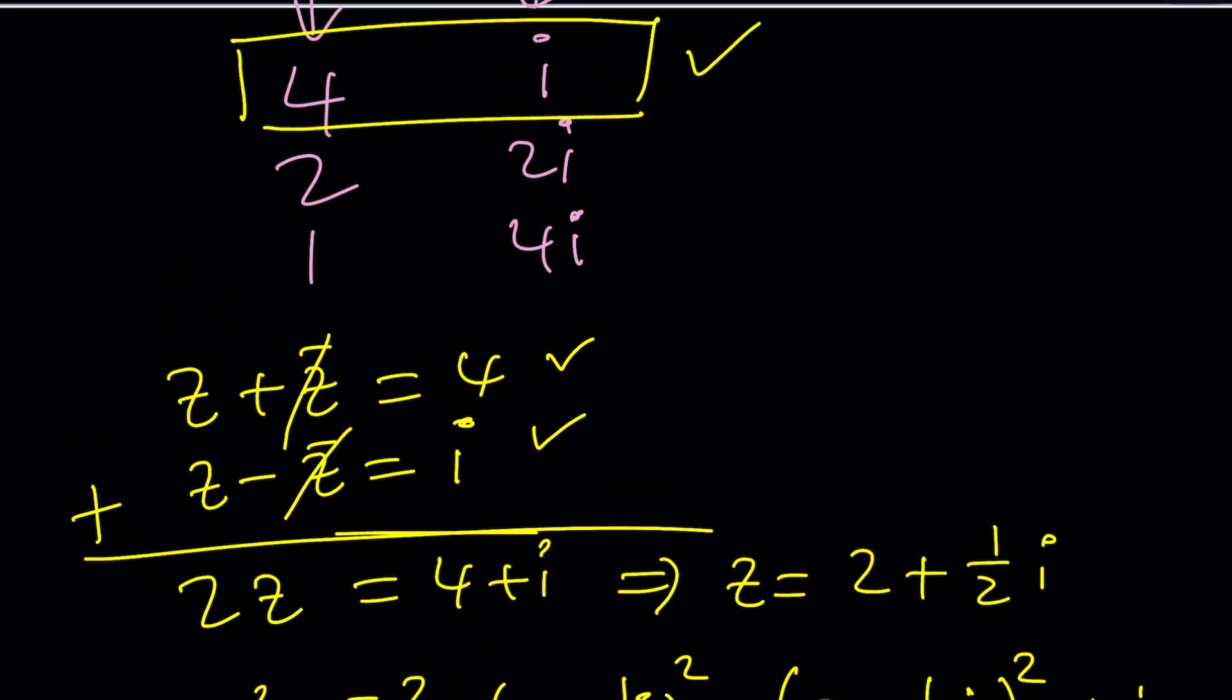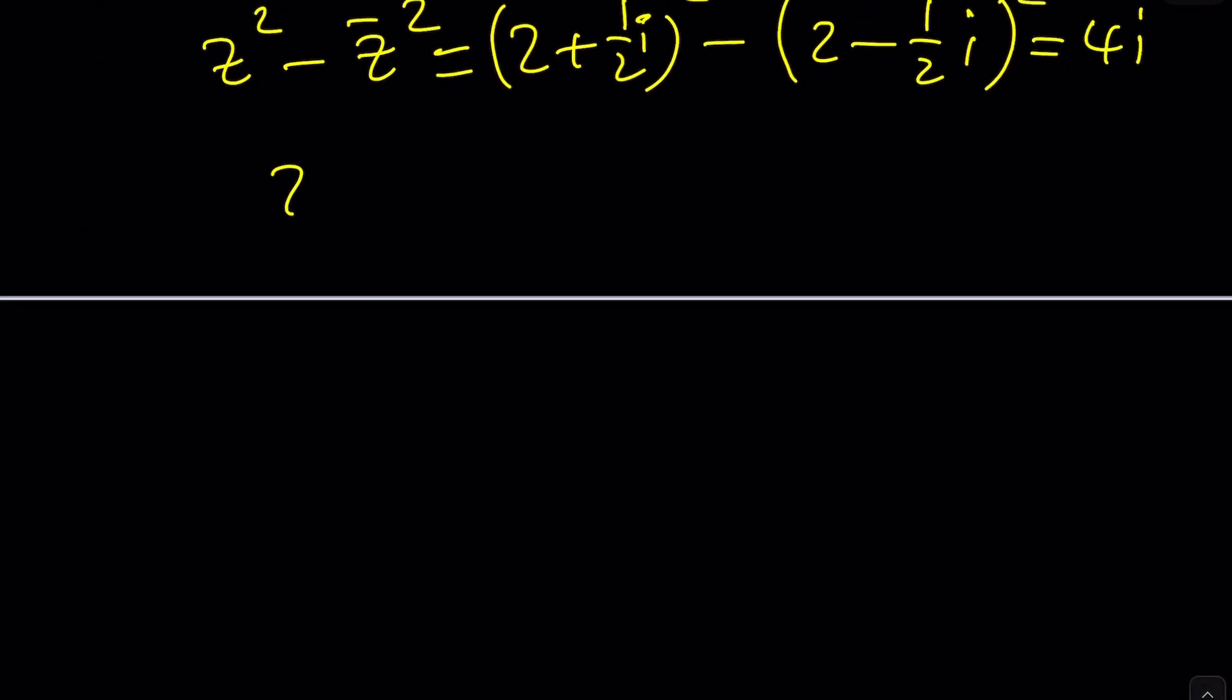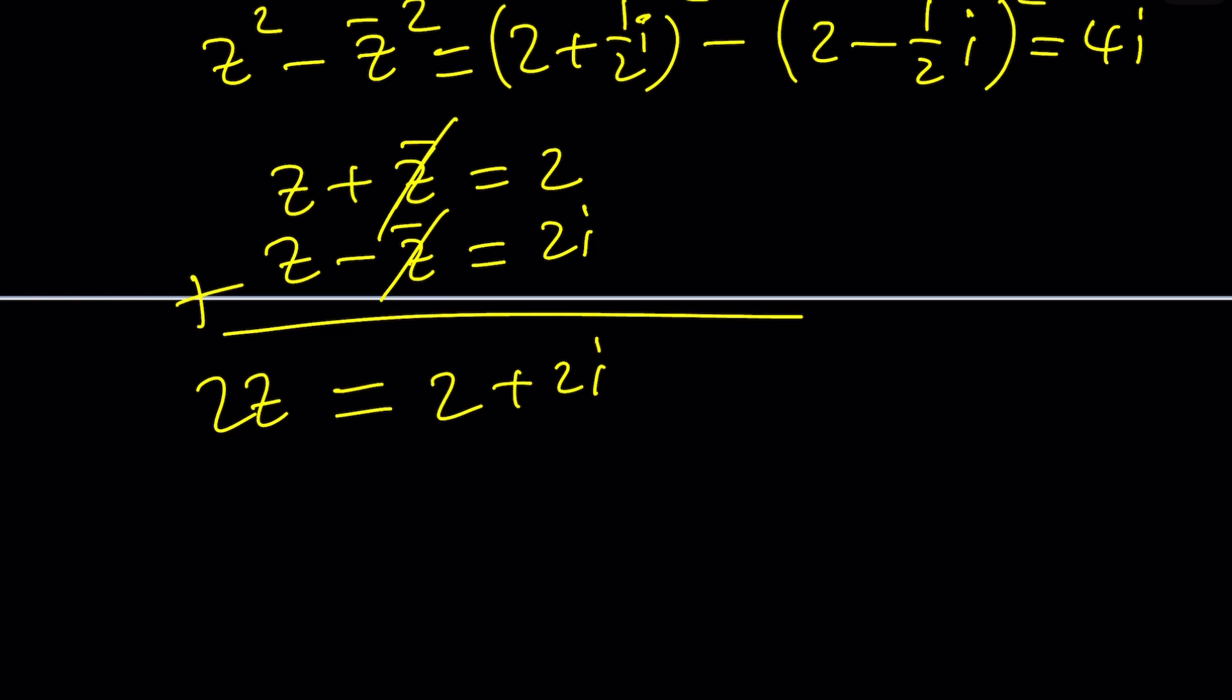How about the second one? 2 and 2i. Let's test that one. z plus z bar is equal to 2, z minus z bar is 2i. When you add these up, you're going to get z plus z, which is 2z, equals 2 plus 2i. And then from here, we got a different solution: 1 plus i.